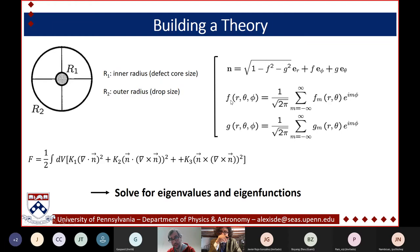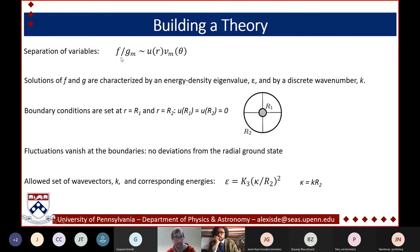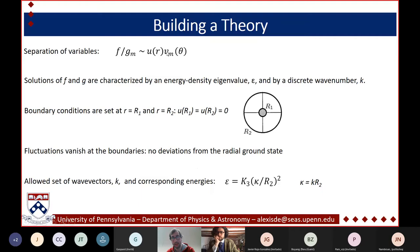A key difficulty compared to previous work is that we break all symmetries by introducing φ-dependence, whereas previous work assumed axial symmetry around the z-axis. This φ-dependence introduces cross-terms between f and g, making it hard to separate solutions individually. We apply separation of variables expressing fm and gm as products of a function of r and a function of θ, then solve the eigenvalue/eigenfunction problem.